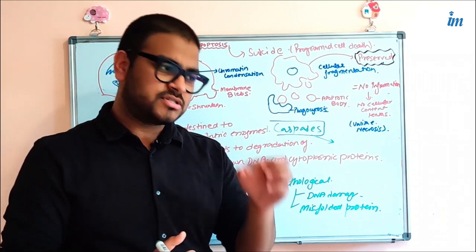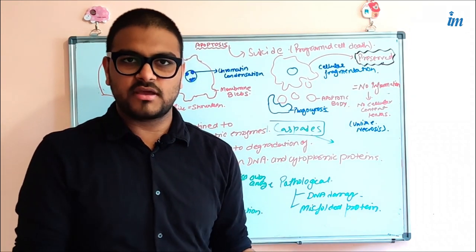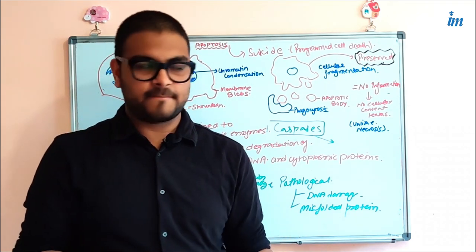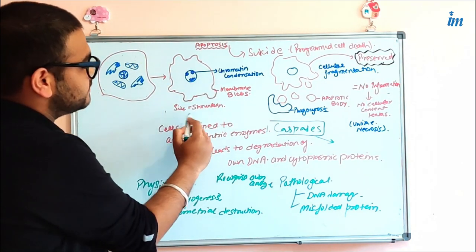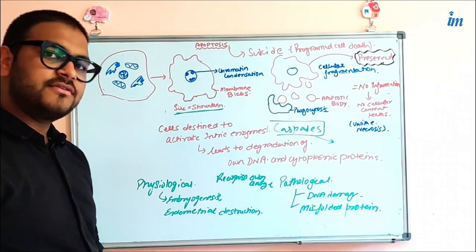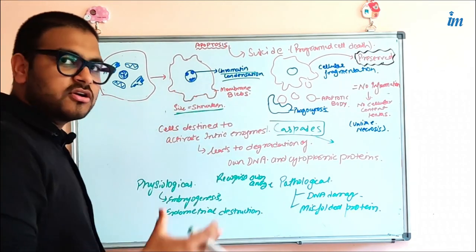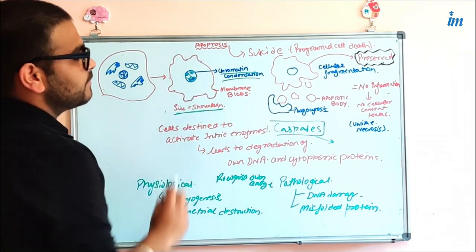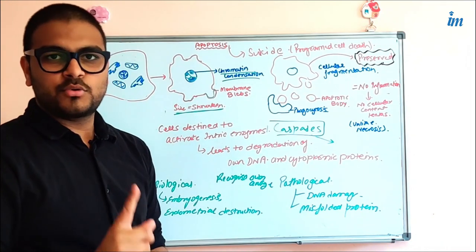How can you identify under the microscope that a cell is undergoing apoptosis and not necrosis? There are morphological features. First, the size of the cell is shrunken in most apoptosis processes. Another notable feature is chromatin condensation — the chromatin of the nucleus condenses and settles on the periphery. There is also the appearance of membrane blebs, which is a feature of apoptotic cell death.